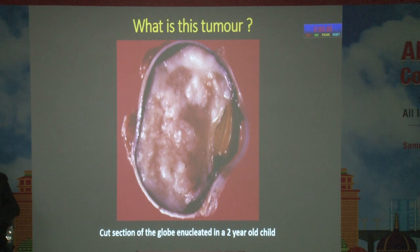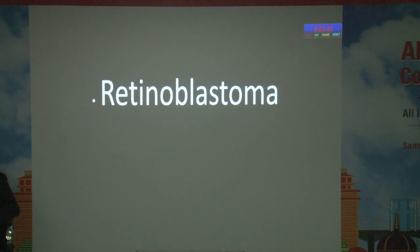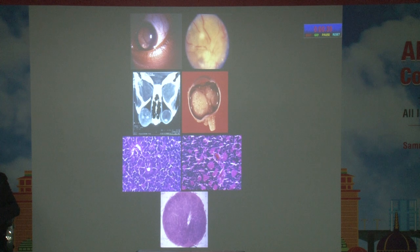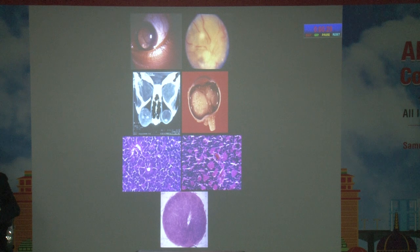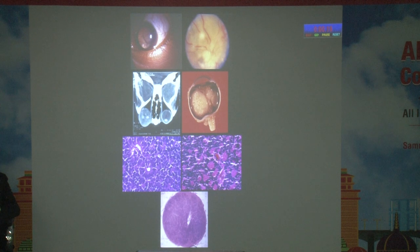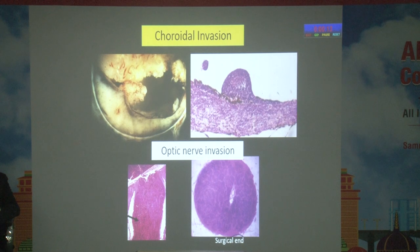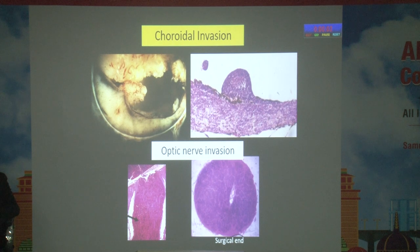What is this tumor? This is the cut section of a globe enucleated in a two-year-old child. This chalky white mass is particularly characteristic of retinoblastoma. Retinoblastoma shows histopathology patterns including the Flexner-Wintersteiner rosette, which has a clear lumen, and the Homer Wright rosette, which does not. There can also be non-rosette or fleurette forms — the undifferentiated type. We need to assess whether there is choroidal invasion and optic nerve invasion, as both indicate poor prognosis for the patient's life.